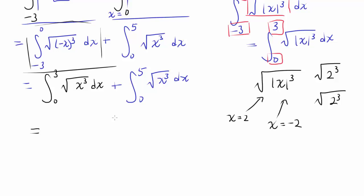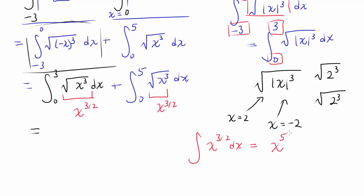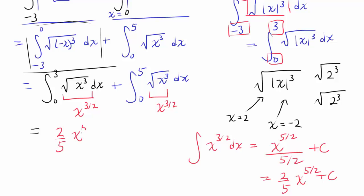The function inside both integrals is x to the 3 halves. Integrating x to the 3 halves is straightforward: the antiderivative is x to the 5 halves divided by 5 halves, which equals 2 fifths x to the 5 halves plus C. So we have 2 fifths x to the 5 halves evaluated from 0 to 3, plus 2 fifths x to the 5 halves evaluated from 0 to 5.